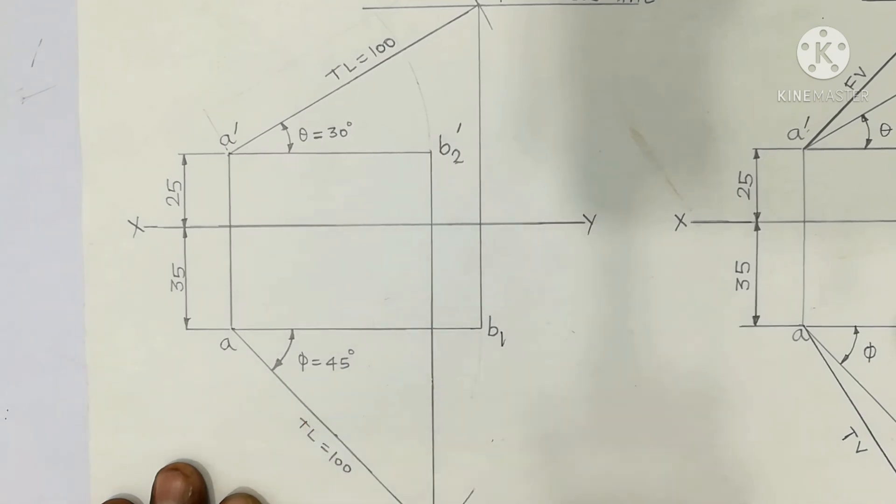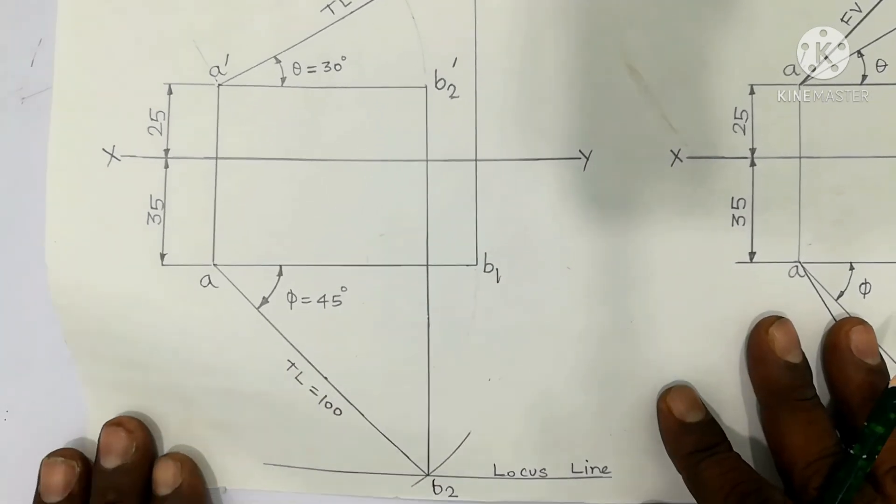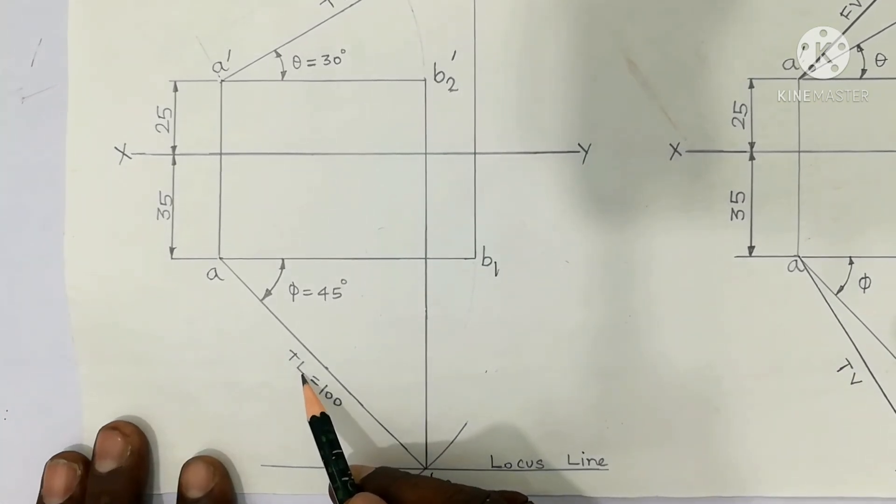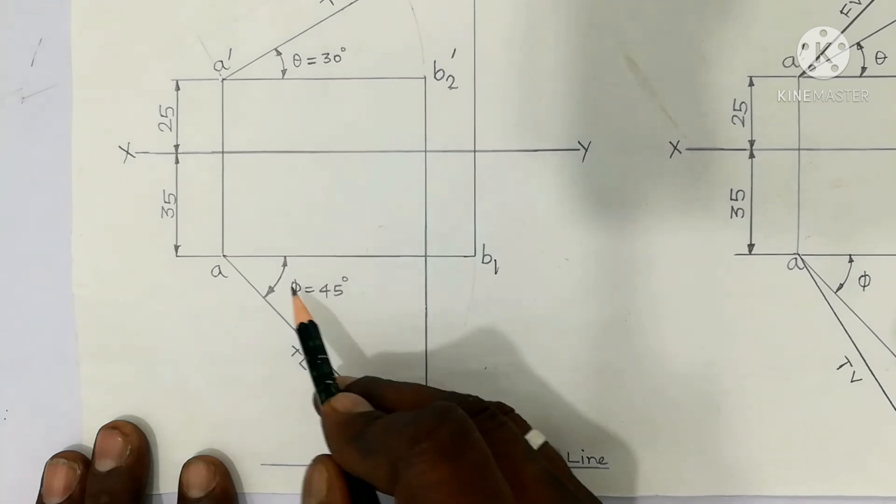Corresponding AB2 is true inclination length, TL true inclination length 100mm, angle 45 degrees. True inclination length is 100mm, AB2 distance.